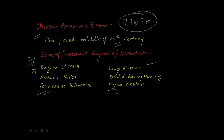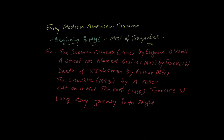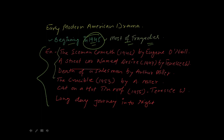Early modern American drama started around 1945, and most of the works were tragedies. This series will also guide you to study important works for your UGC NET exams or other English literature exams. First is The Iceman Cometh (1946) by Eugene O'Neill, A Streetcar Named Desire (1947) by Tennessee Williams, and Death of a Salesman.